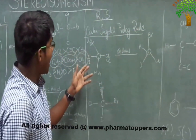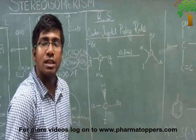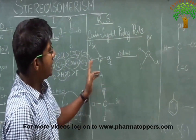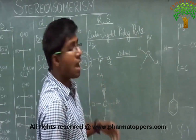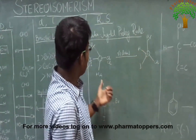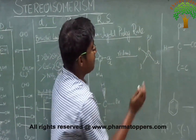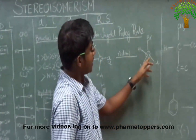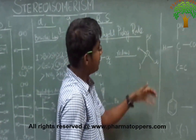Iodine has a higher atomic number than bromine, than chlorine, than hydrogen — very simple. The second rule is the most important rule that most of us forget. The second rule states: redraw the structure and project the lowest priority group away from you. I have redrawn this structure and projected hydrogen — the lowest priority group — away from the viewer, going into the board.